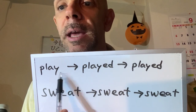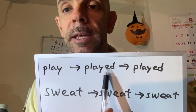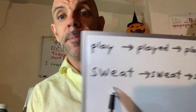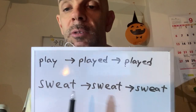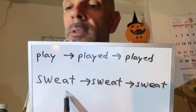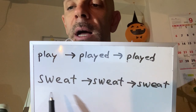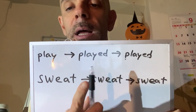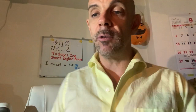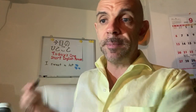普通の動詞は、play、played、played — 原形、過去形、過去分詞、ED をつけるだけですね。Play, played, played. Sweat は例外ですよ。動詞の sweat は例外だけど、とても簡単です。Sweat. 過去形も過去分詞も sweat. 綴りも発音も、まったく一緒ですよ。今日の一言「I sweat a lot」は、現在形も過去形も I sweat a lot って言うんですよ.